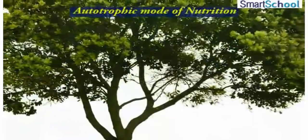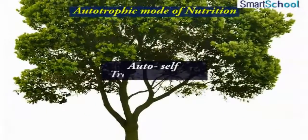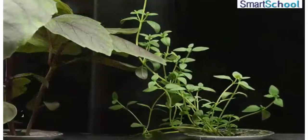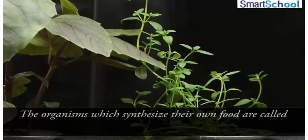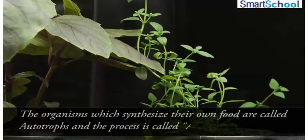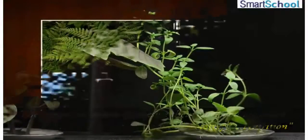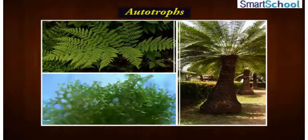One of the major modes of nutrition is autotrophic. Auto means self and trophy refers to nutrition. So the organisms which synthesize their own food are called autotrophs and the process is called autotrophic nutrition. Therefore all green plants are called autotrophs.